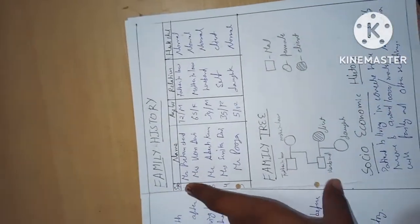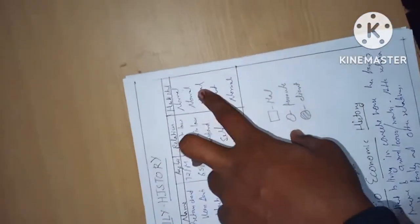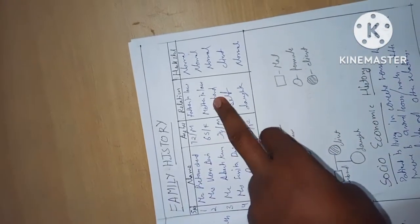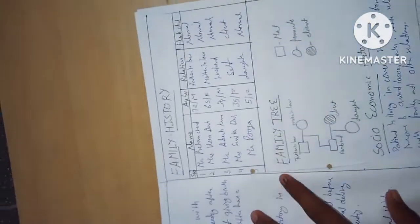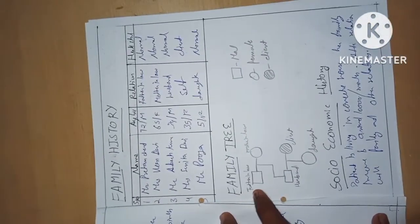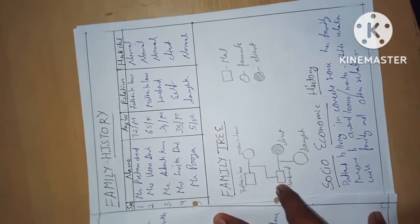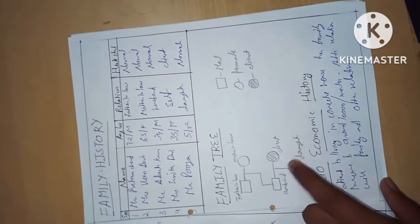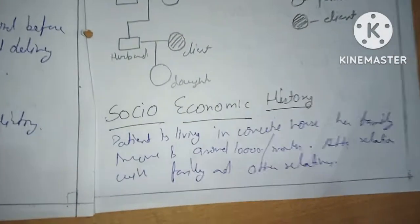Family history includes serial number, name of family member, age, sex, relation to patient, and health status — normal or abnormal. Next, we make the family tree, where a square represents male, a circle represents female, and a filled circle represents the client.